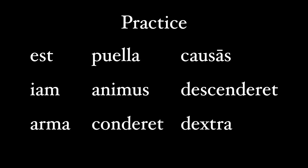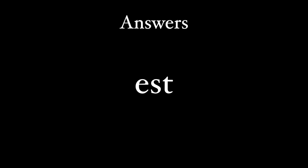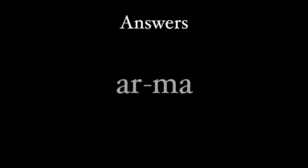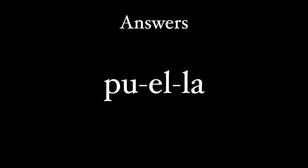Now to practice - here are nine words. Pause the video, write them down, and try to syllabify them, then start the video back up and see how many you get right. Starting with the easy one: 'est' has one vowel, so it's one syllable. 'Iam' looks like it should have two syllables, but that 'i' is actually a consonant, so it just has one syllable. 'Arma' has two syllables with two consonants in between, so we split them up. 'Puella' has three syllables - 'ue' is not a diphthong, so our first syllable is 'pu,' followed by 'el,' then 'la.'